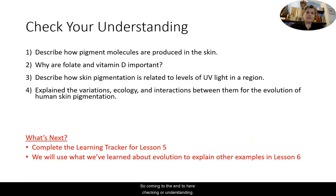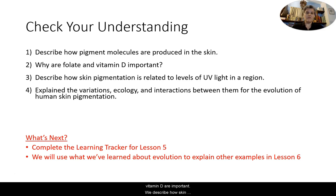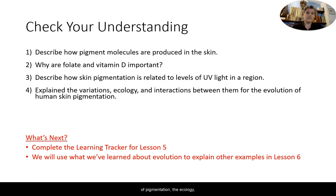Coming to the end, checking our understanding: we described how pigment molecules are produced in the skin, explained why folate and vitamin D are important, described how skin pigmentation is related to levels of UV light in different regions, and explained the variations of pigmentation, the ecology, and the interactions between those for the evolution of human skin pigmentation.